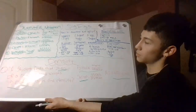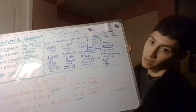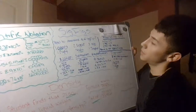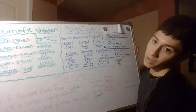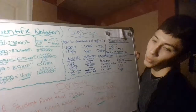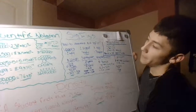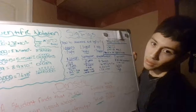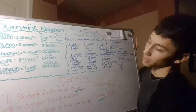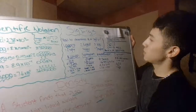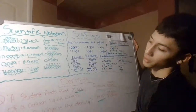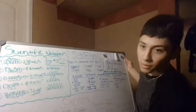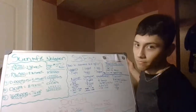So we went over density, sig figs, scientific notation, and the rules of rounding. I hope you could see everything and that my explanations were clear. Thank you.